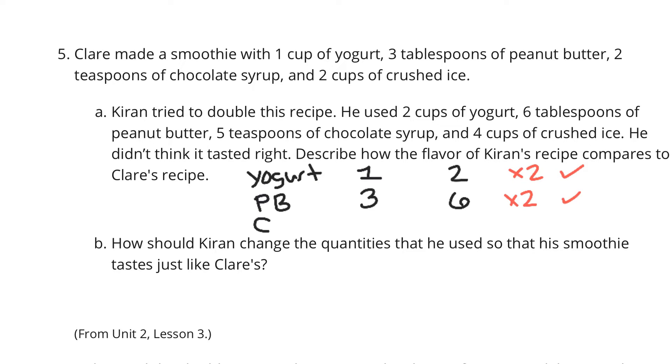What about the chocolate syrup? Claire had it at 2 teaspoons. Kieran had it at 5. Well, this is actually going to be, then, multiplying it by 2 and a half. So there's our difference.